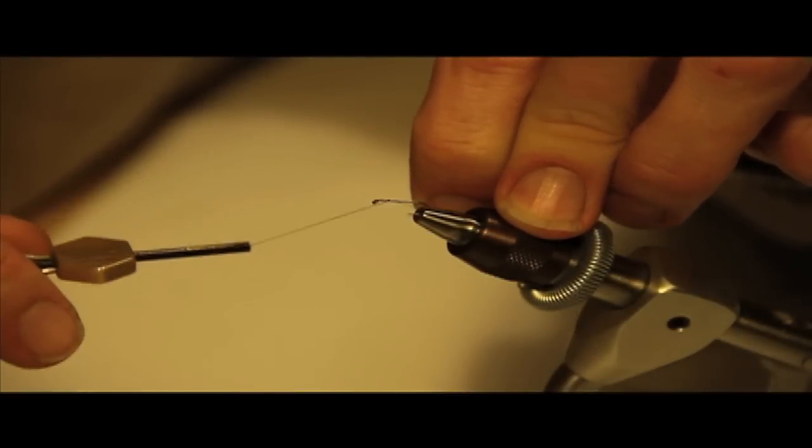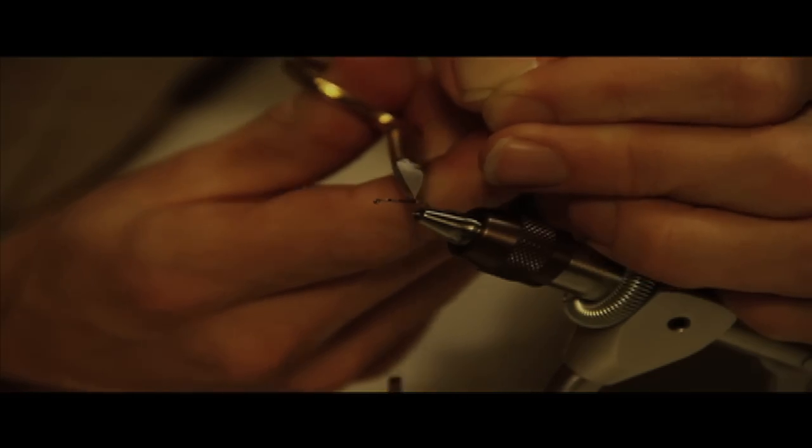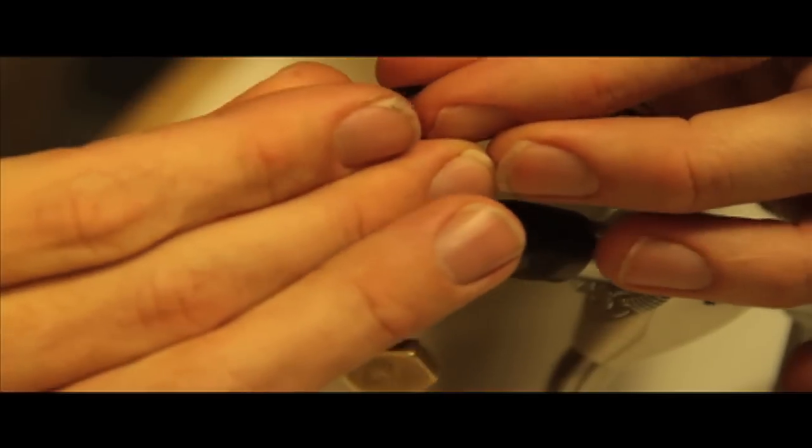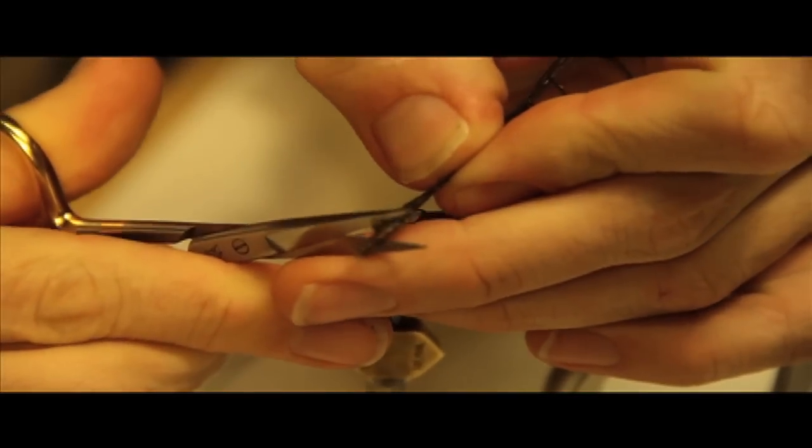Step one, we're going to attach the thread, bring it to the back. For the simple Griffith's Gnat, what we're going to start with is about four strands of peacock. I've just kind of gotten them together. I'm going to trim the tips so they're about even. We're in a little bit thicker stuff.